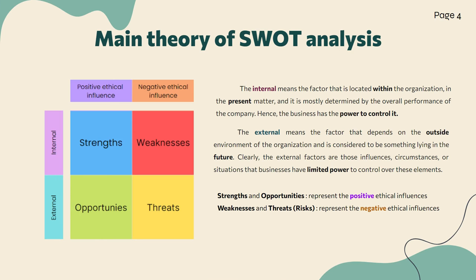Now let's move to the main theories of the SWOT analysis. In the table below, the four aspects of SWOT are categorized vertically by internals and externals, and horizontally by positive and negative. The internals refer to things located within the organization in the present — elements that the firm has the power to control. The externals refer to factors that depend on the outside environment of the organization and lie in the future.